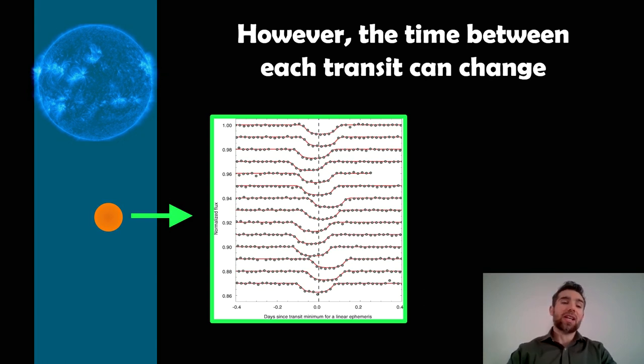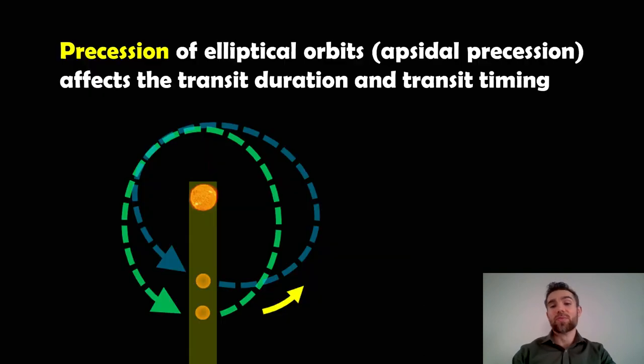This one we're interested in is going to be due to the actual orbit itself. Because it precesses, it changes its orientation relative to Earth. So the precession of an elliptical orbit will affect its duration and its transit timing.